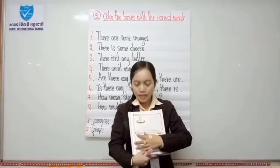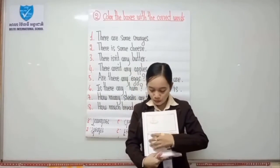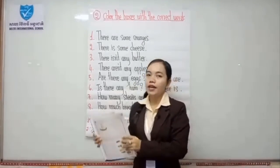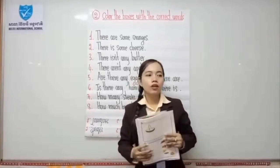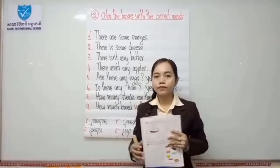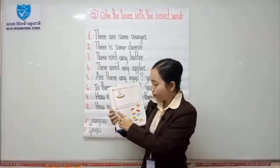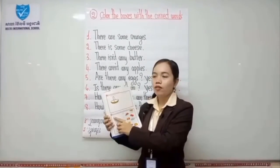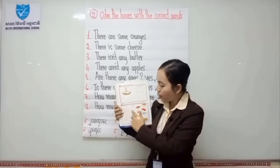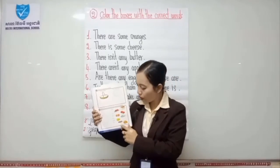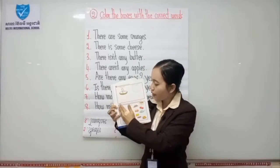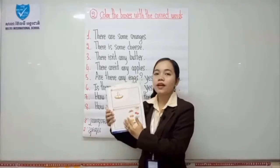Exercise number 4 — I want you to match the beginning of the word with the ending. For example, number 1: 'b' and 'ead' makes the word 'bread.' You can see the picture here — 'bread.' So you look at the picture and match the beginning and ending to form the word.